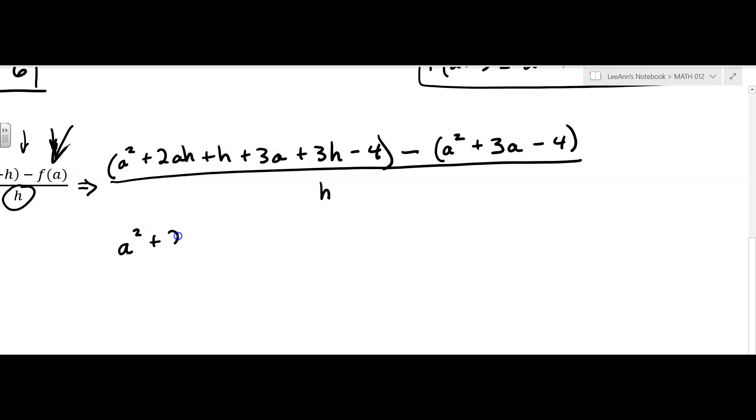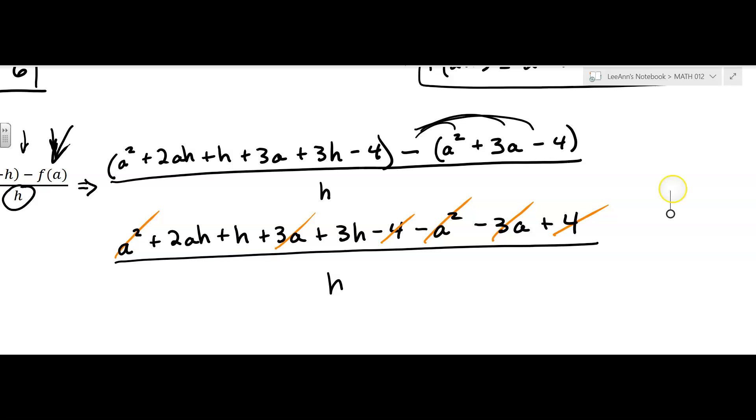Let's remove the parentheses. There's no distributing on the first part. And now we'll have to distribute the minus sign. So it's going to be minus a squared minus 3a plus 4. And then this whole thing is being divided by h. Now some good things should happen. We should get some kind of canceling to happen. So a squared and minus a squared, those cancel out. The 3a and the minus 3a cancel out. The minus 4 and the plus 4, those cancel out. And so now it's a little bit better. Got rid of some stuff.